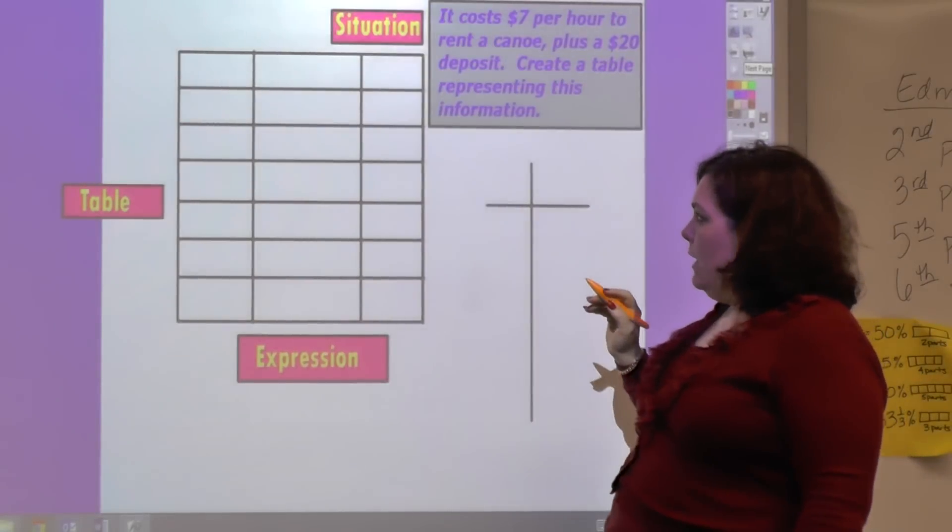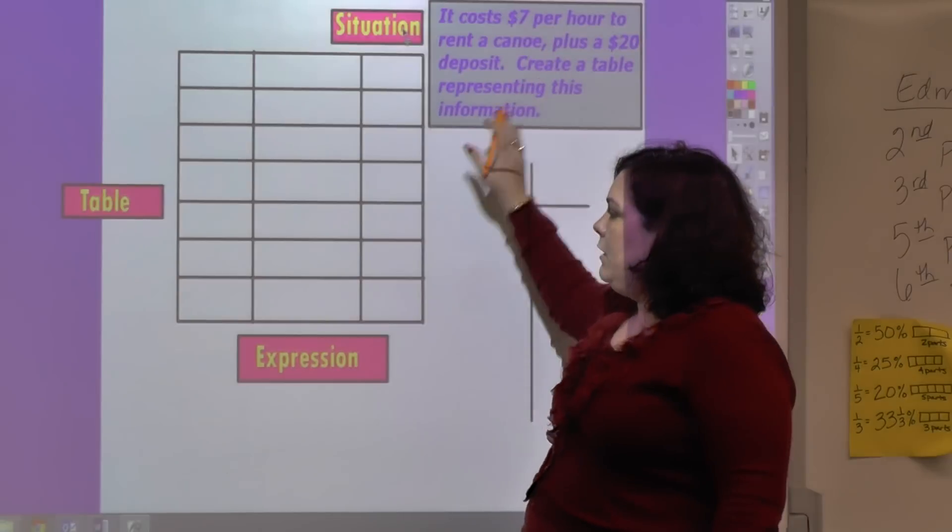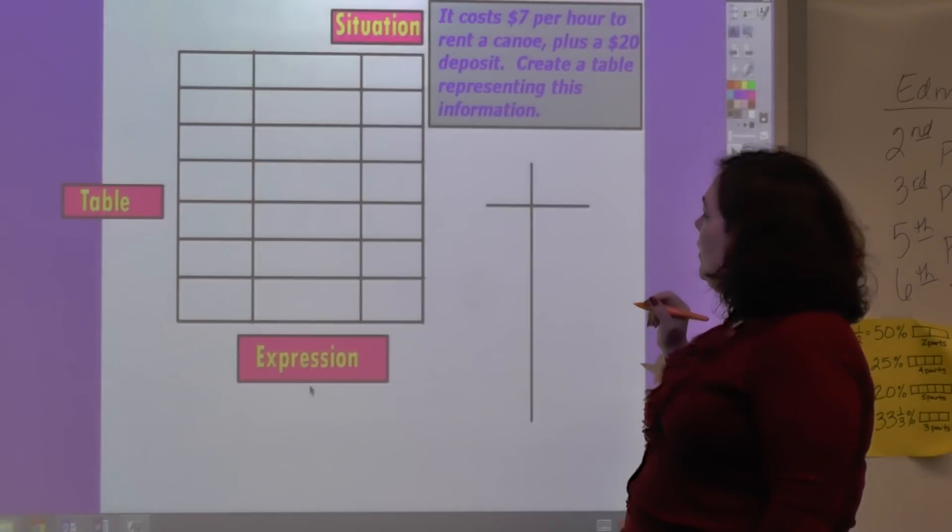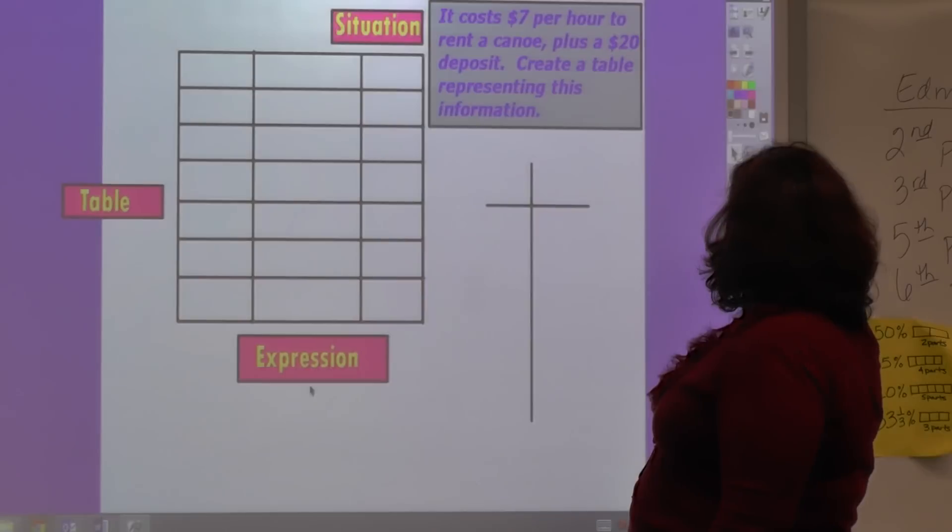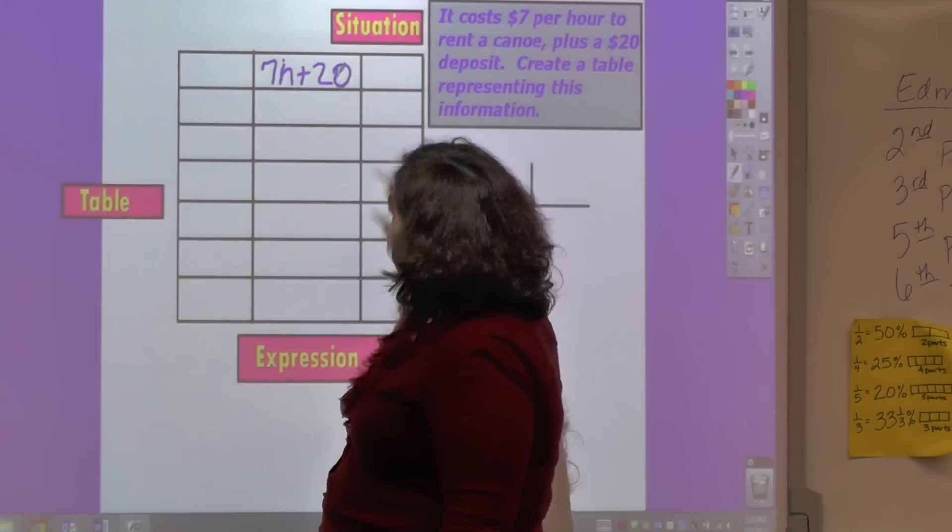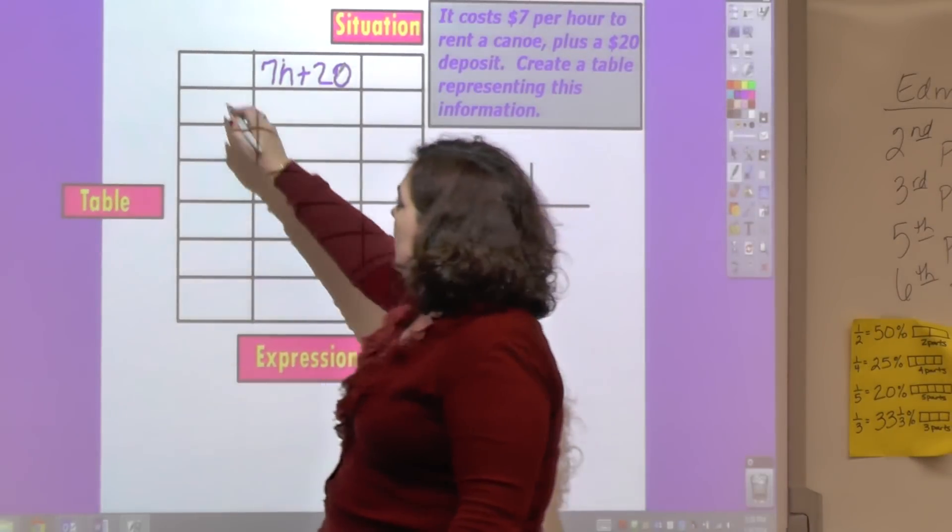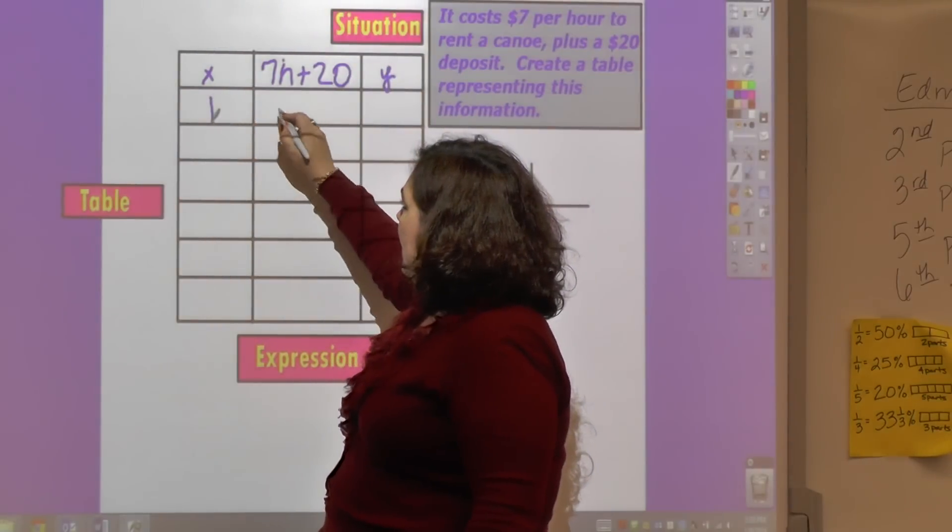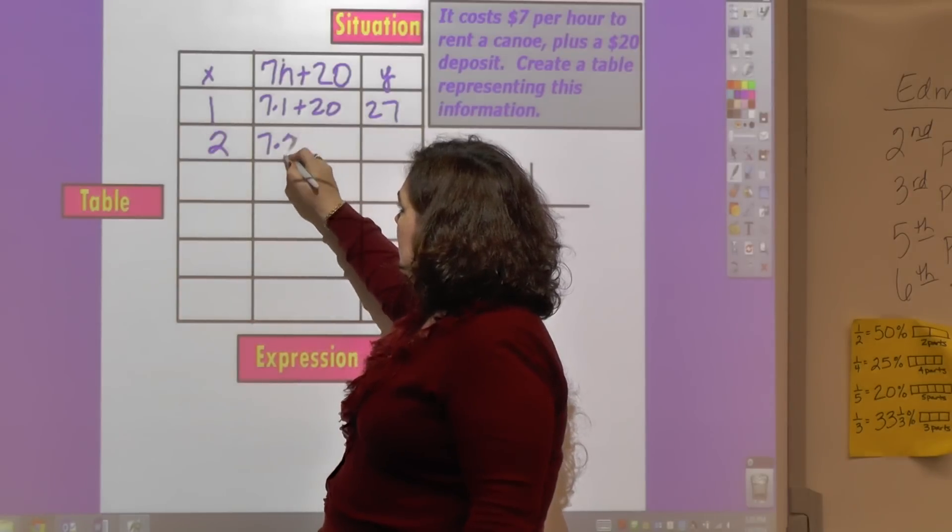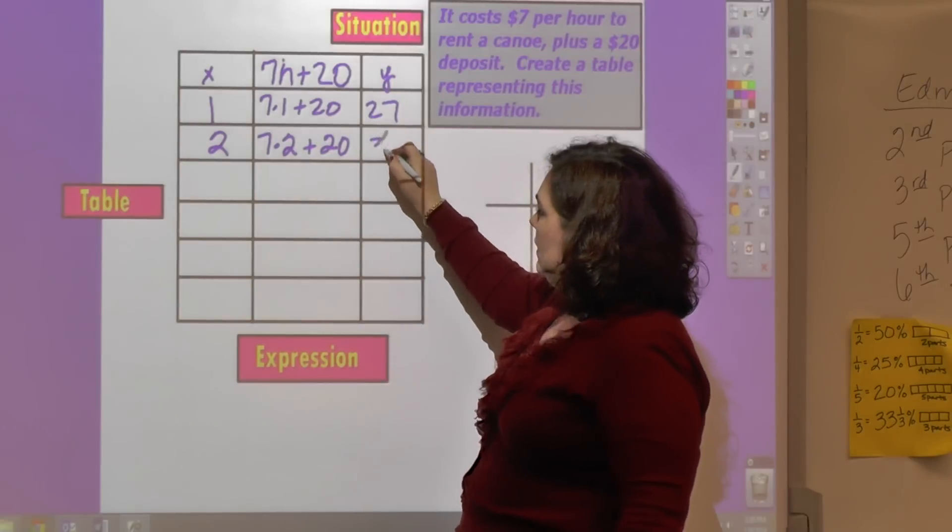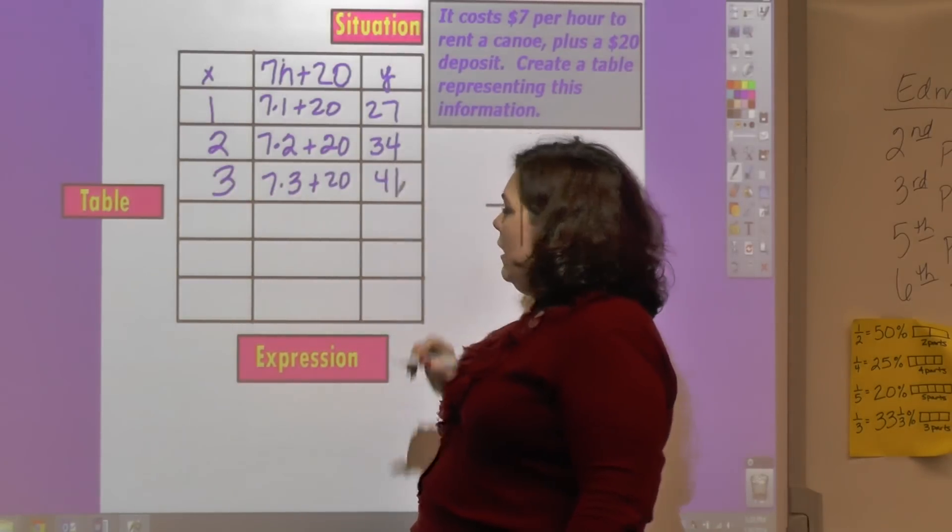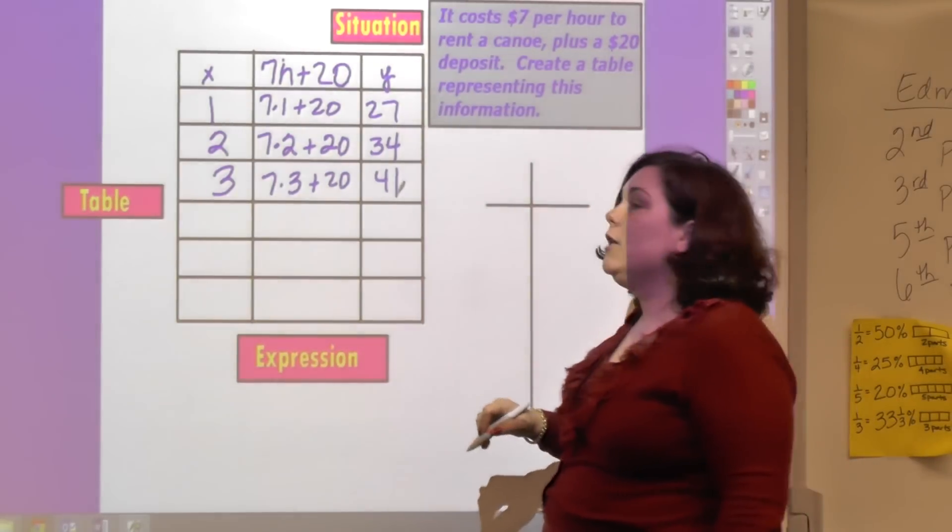Let's look at some examples. I've labeled this is the situation, this is the table, and we're going to find the rule which is the expression. Here's our situation: it costs seven dollars per hour to rent a canoe plus a twenty dollar deposit. If we rent the canoe one hour, that's seven times one plus 20, which would be twenty-seven. We rent the canoe two hours, that's seven times two plus twenty, which is thirty-four. We rent it three hours, that's seven times three, twenty-one plus twenty, which is forty-one.